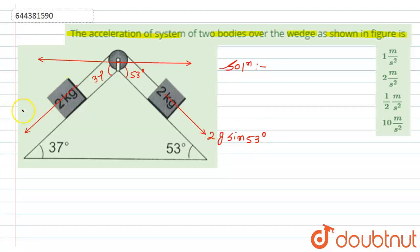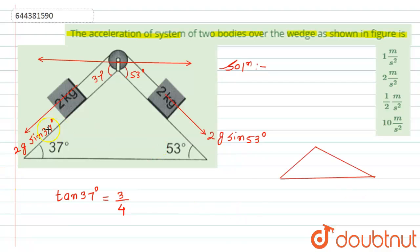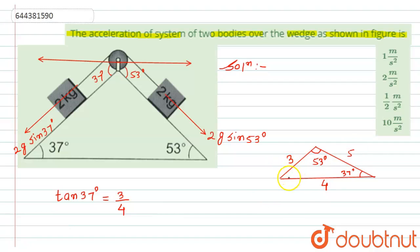The force in the other direction can be given by 2g sin(37°). Now to find these values, we know that tan(37°) equals 3 by 4. If we draw a triangle, with this angle as 37° and this angle as 53°, then according to tan(37°) = 3/4, this side becomes 3, this side becomes 4, and the hypotenuse becomes 5.